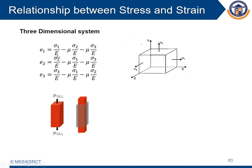So I am able to estimate the strain experienced by a three-dimensional component: sigma 1 by E minus mu into sigma 2 by E minus mu into sigma 3 by E. Likewise, for the other two directions, we can directly calculate. For the breadth-wise direction, we keep the strain in the breadth direction positive and the other two negative, as those two are lateral strains compared to the breadth direction.